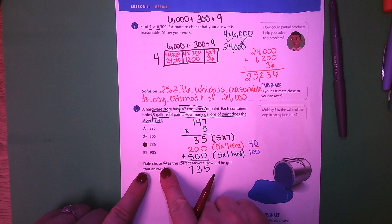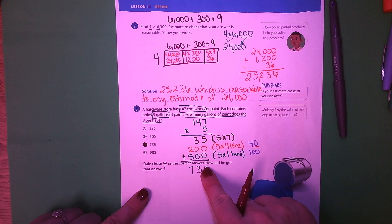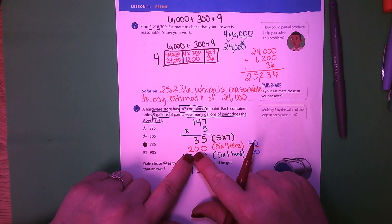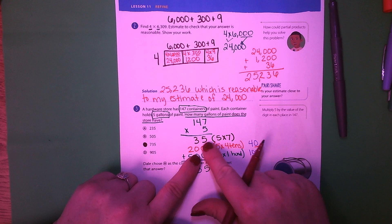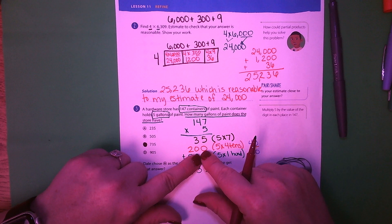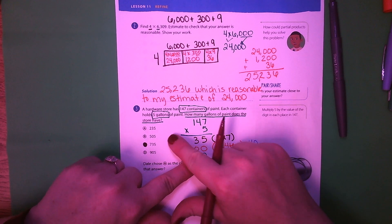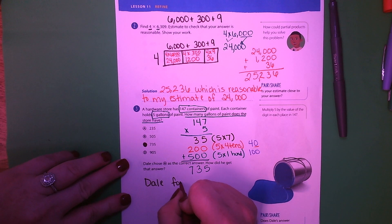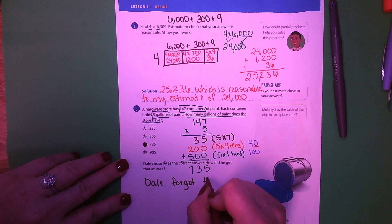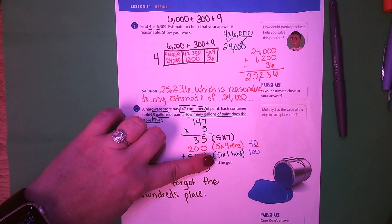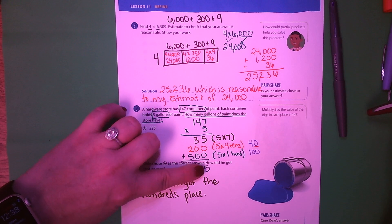Down here it says Dale chose A as the correct answer. How did he get that? It looks like he did the ones place and the tens place but left off the hundreds. If you add 200 plus 35 it's 235, which is what Dale got. So Dale forgot the hundreds place — he stopped too early and added those, but he had one more partial product to go.